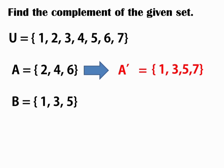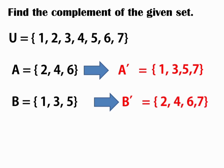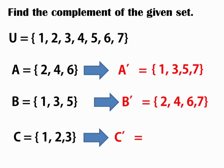Now, how about B complement? If B is equal to 1, 3, 5 and the universal set is the same, which is 1 to 7, so B complement is equal to 2, 4, 6, 7. Okay? Next, how about C complement? If C is equal to 1, 2, 3 and using the universal set which is 1, 2, 3, 4, 5, 6, 7, so C complement is equal to 4, 5, 6, 7. Okay?